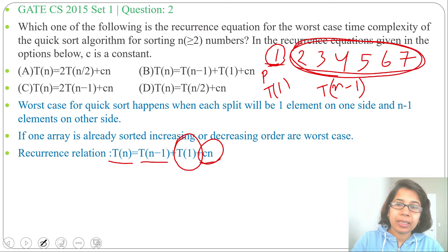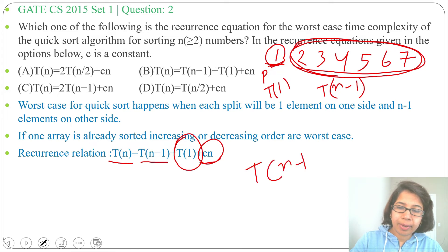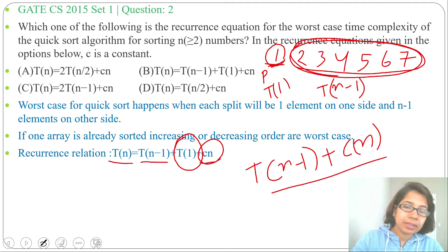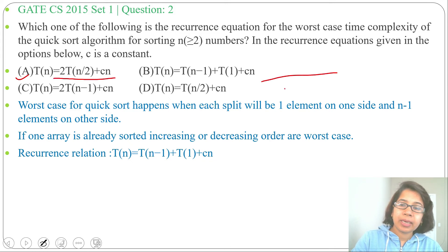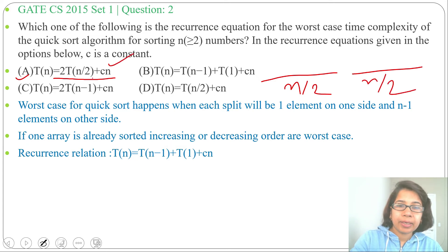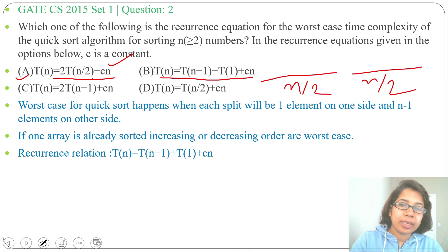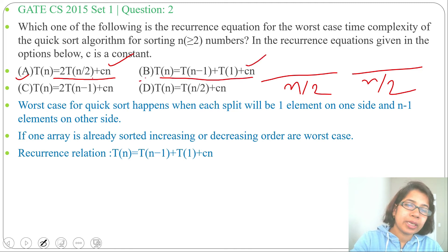Sometimes you may see the recurrence relation written as T(n-1) + cn + cn for the worst case. The best case recurrence relation is T(n) = 2T(n/2) + cn — this is a balanced partition where one side contains n/2 elements and the other side also contains n/2 elements. When one side contains just one element and the other side contains n minus one elements, that is the worst case.